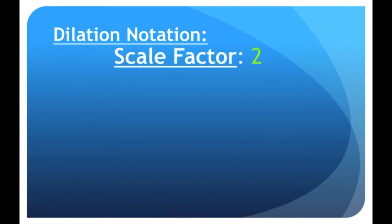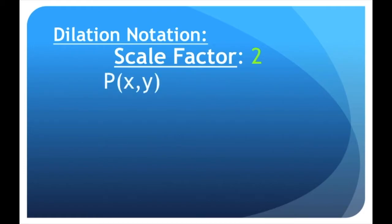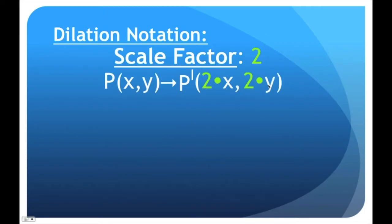So for dilation notation, we use our scale factor. The way we dilate points is we multiply by the scale factor. That's exactly why when a scale factor is greater than one, our figure gets bigger. If you multiply a number by two it doubles, by three it triples. So any time we multiply by a number greater than one, we get a bigger answer. For example, if we have a point at coordinates x, y, then P prime is going to be two times x and two times y — we multiply both coordinates by the scale factor.